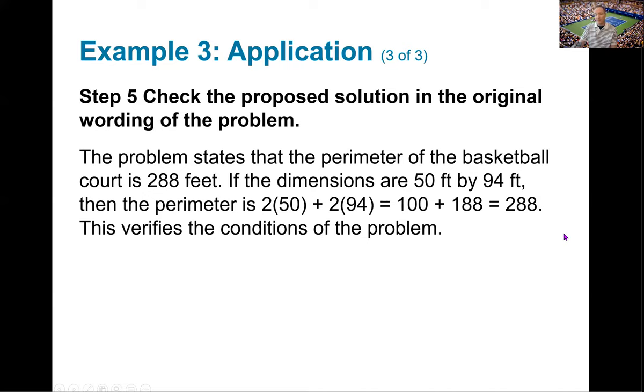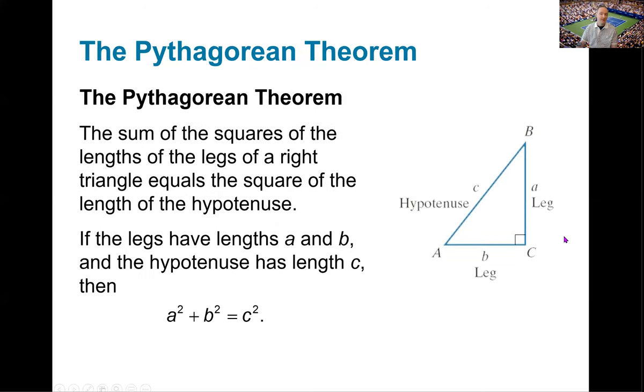Now, the last type of problem that we'll be looking at in this section, we'll look at triangles. And the Pythagorean theorem should be very familiar. Where we say, within any right triangle, the legs, which are always adjacent to the right triangle, can be called a and b. And the hypotenuse c is always opposite the right angle. The proportion of the length of the sides of the legs to the hypotenuse can be resulted by this equation. The sum of the squares of the legs is equal to the square of the hypotenuse, or a² + b² is equal to the hypotenuse c².